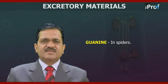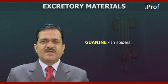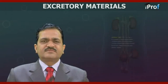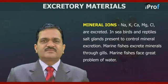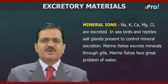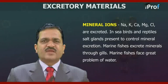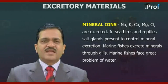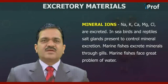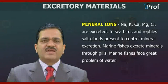Another excretory material is guanine, found in spiders. Spiders eliminate excretory material in the form of guanine. Additionally, mineral ions — sodium ion, potassium ion, calcium ion, magnesium ion, and chloride ions — are excreted in seabirds and reptiles. Salt glands are present to control mineral excretion. Marine fishes excrete minerals through gills.